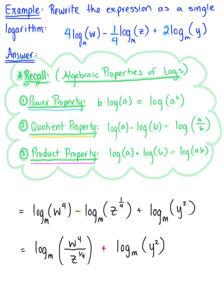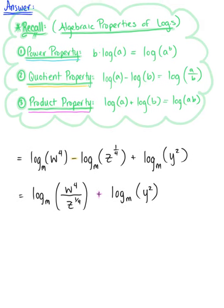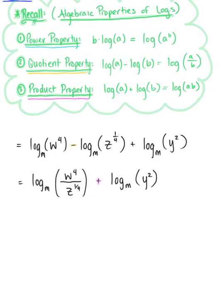And let's give ourselves a little bit more room here. And so applying the product property, we are left here with the logarithm base m of w to the fourth divided by z to the one-fourth multiplied by y squared.